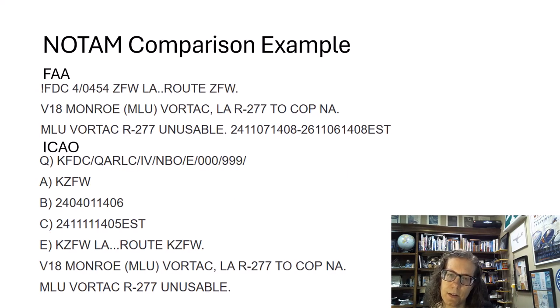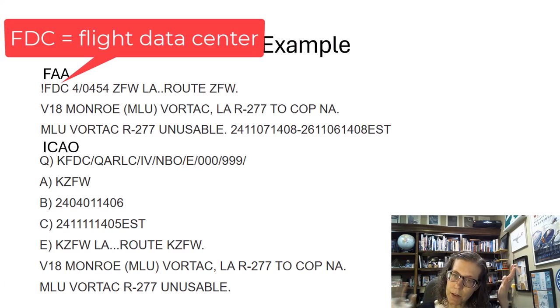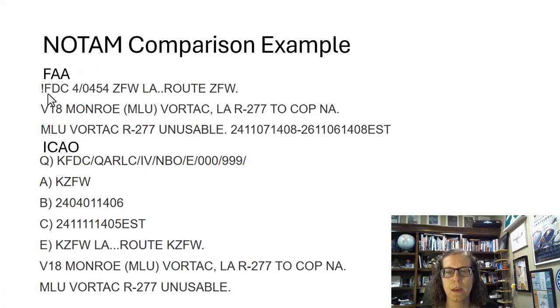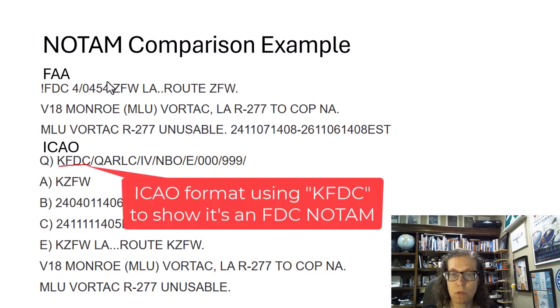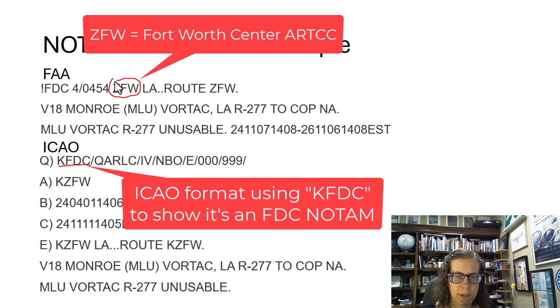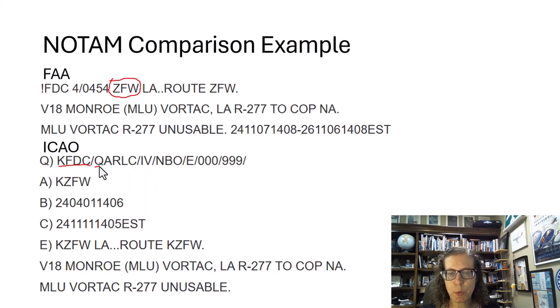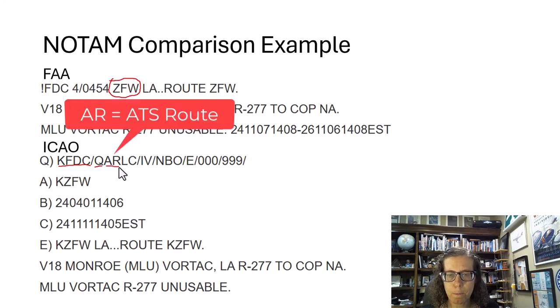Last one I want to look at actually has to do with the FDC NOTAM because I was like well how are they doing these for the flight data center NOTAM. Here's a flight data center NOTAM that I found. Instead of being from an actual center, I found this interesting even though in the FAA's coding of this it says it came from Fort Worth Center, they're saying it's a flight data center NOTAM. Here's the Q group again. AR means it is an ATS route, in U.S. terminology that's an airway.